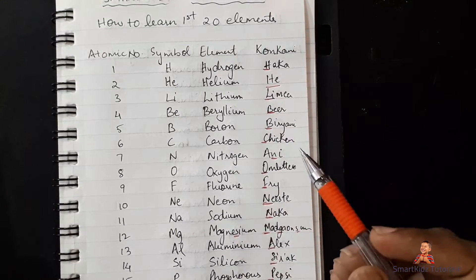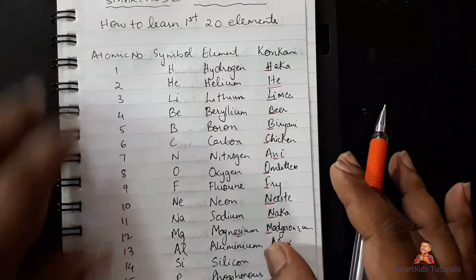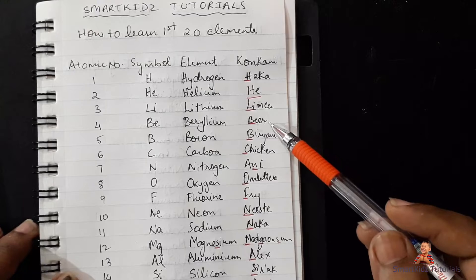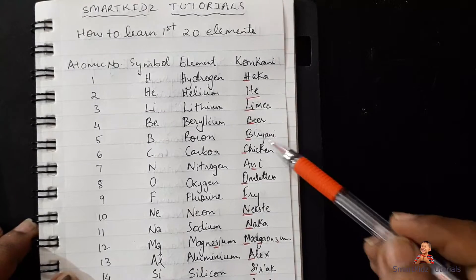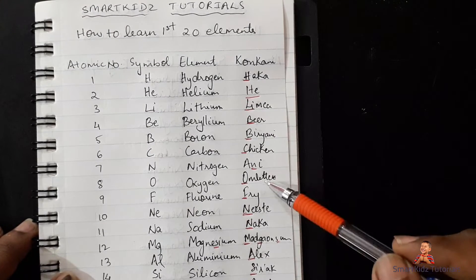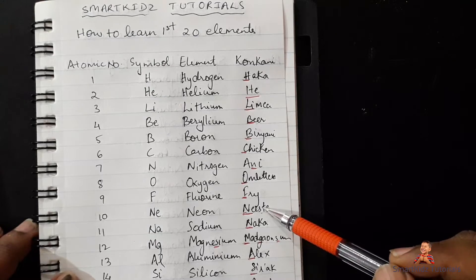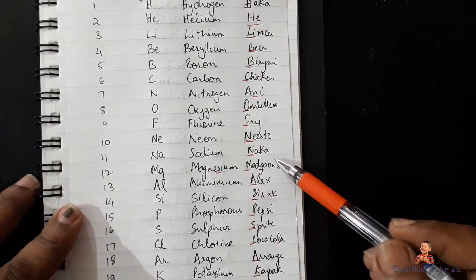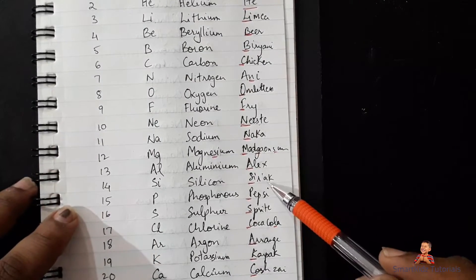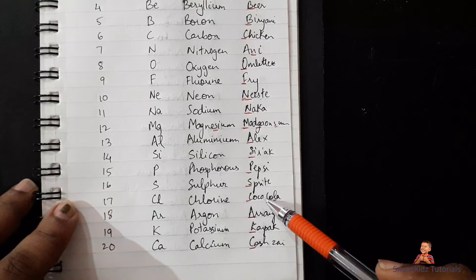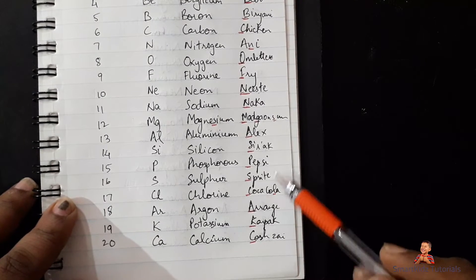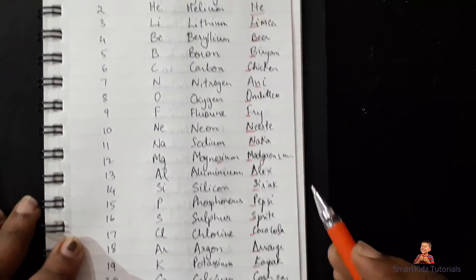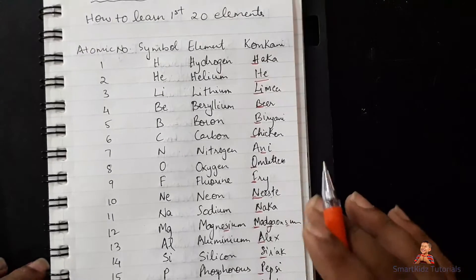So, the students have a party. They have a beer, an egg, and a chicken. They have a party with beer, biryani, chicken, and omelette fry. For the drinks we use Pepsi, Sprite, Coca-Cola, and Arrange. This mnemonic covers all 20 elements.